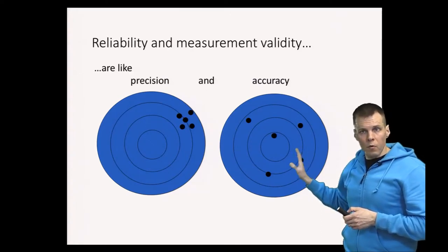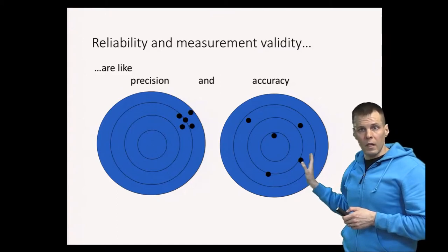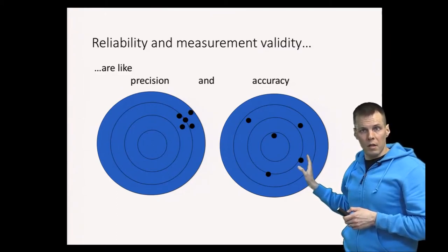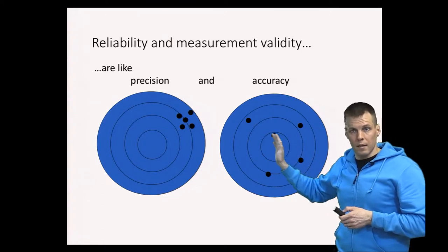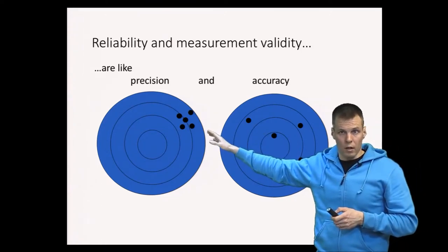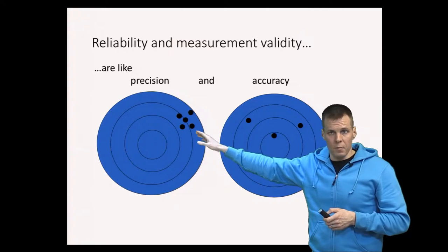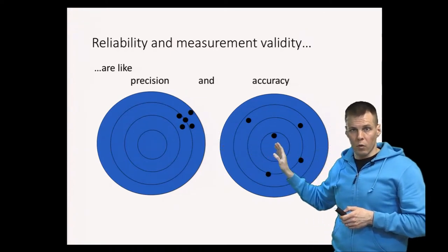Let's postpone that for a while but it's at this point important to understand what these concepts are. So the validity is whether the sights are correct and then reliability is whether the shooter hits the same spot all the time. So are you hitting the same spot? Are you hitting the bull's eye?